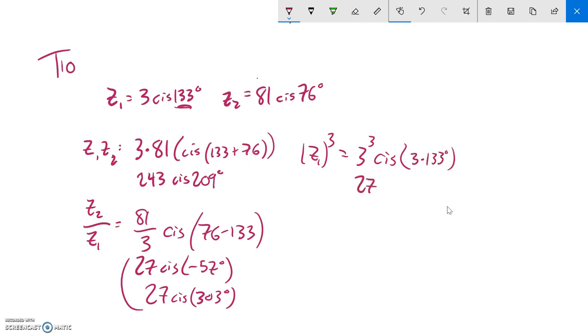Let's see where we end up. That's 27. 3 times 133 is 399, and that's bigger than 360, so I'm going to subtract 360 from it. It'll be something that terminates in the same location but it'll be between negative 360 and 360, just easier to read. So there's z1 to the third power.